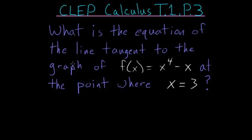What is the equation of the line tangent to the graph of f(x) = x^4 - x at the point where x = 3?